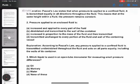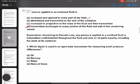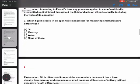Question number two: Pressure applied to an enclosed fluid is increased and applied to every part of the fluid. The answer is option D. Question number three: Which liquid is used in an open tube manometer for measuring small pressure differences?